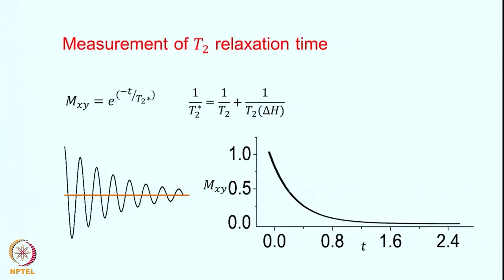Now, measurement of T2, the transverse relaxation time. The FID decays due to two factors: the spin-spin relaxation time T2 and contributions from field inhomogeneities. Field inhomogeneities in the sample cause different lines to precess at slightly different frequencies, and this inhomogeneity appears as an additional line-width factor. Therefore the measured time constant is T2*, where 1/T2* = 1/T2 + 1/T2(inhom). The field inhomogeneities cause dephasing, which leads to cancellation of magnetizations and apparent intensity loss. This contribution must be removed if you want to measure T2 precisely.